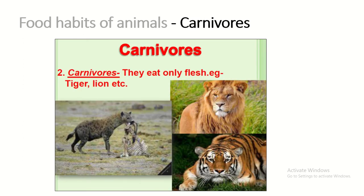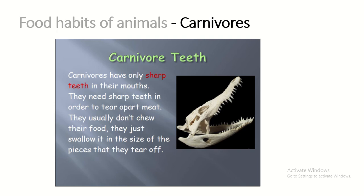Carnivores. 'Carni' means flesh. Carnivores are those animals that eat only flesh. For example, tiger, lion, and many more. Carnivore teeth: carnivores have sharpened teeth. They are not able to chew food — they tear off the flesh, divide it into pieces, and swallow it.